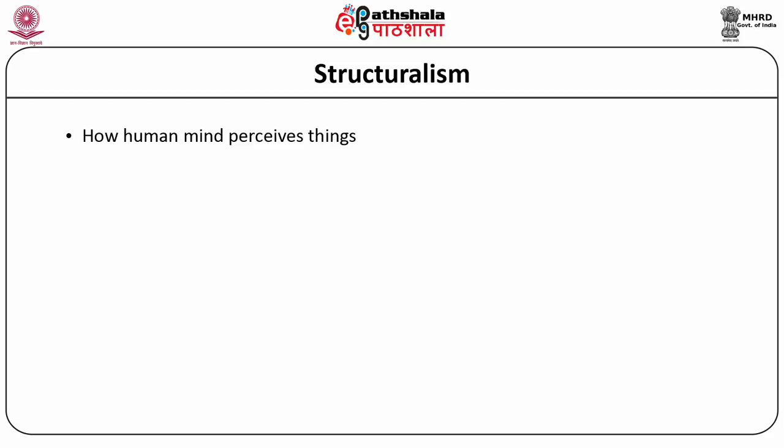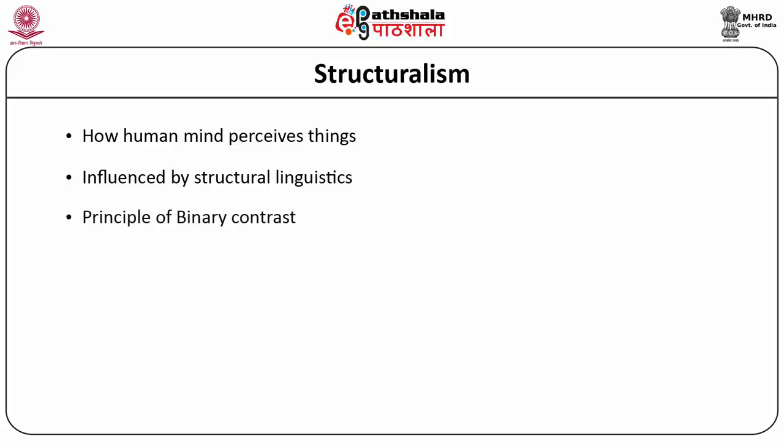What did Lévi-Strauss have to offer in terms of theoretical contribution to anthropology? He argued that unless we understand the way the human mind perceives things, it is not going to be possible to explain social phenomena. While British social anthropologists were more interested in studying human behavior, the French tradition was more interested in knowing how the human mind carried out its own activities. French anthropologists were inspired by a linguistic tradition called structural linguistics, which examined why similar-sounding words with slight differences talk about entirely different meanings. They argued that the human mind is trained to perceive things in binary contrast.